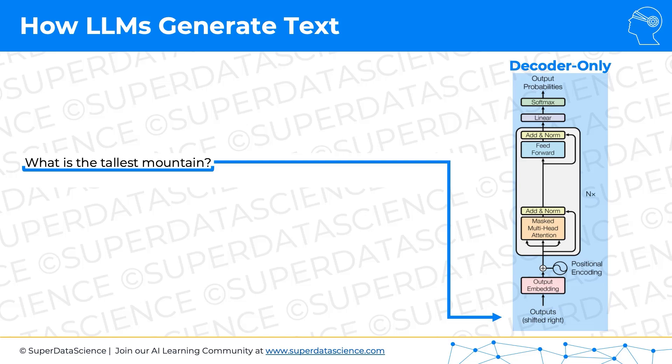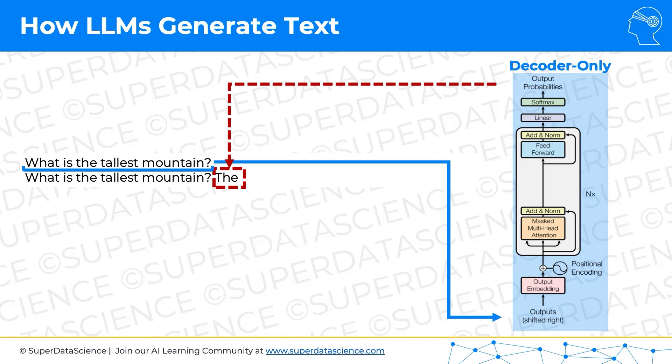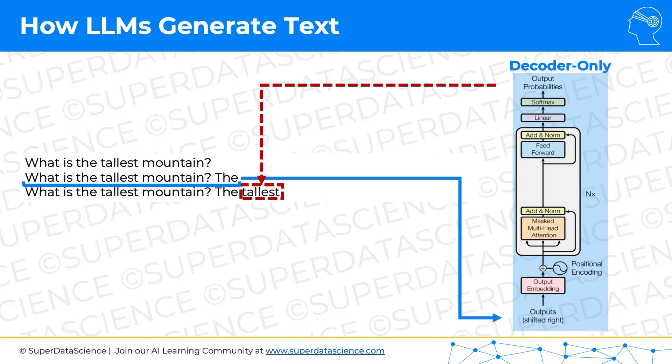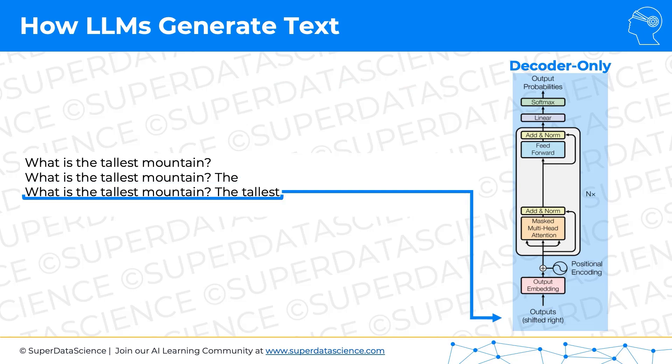And it will come up with the next most probable word. That's what large language models do — they predict the next most likely word. In this case, it will be the word "the." This whole prompt, including the word "the," will be taken in again by the large language model as input — even though at the bottom it says output. We'll talk about that in upcoming tutorials, but it takes it in because that was effectively the output, and now it's become the input. It ingests this text, which goes through the model again, and it spits out the next word, and so on.